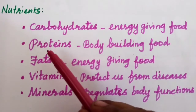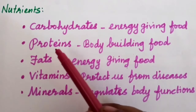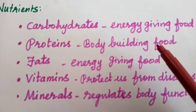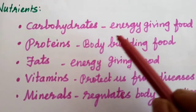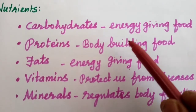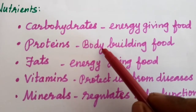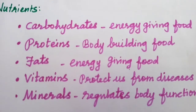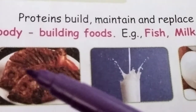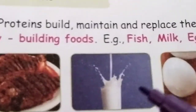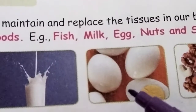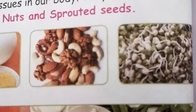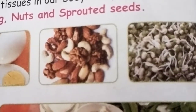Students, the next one is proteins. They are an important nutrient called body-building food. Why are they called body-building food? Because proteins give us growth, so they are called body-building food. Examples: fish, milk, eggs, nuts, and sprouted seeds.